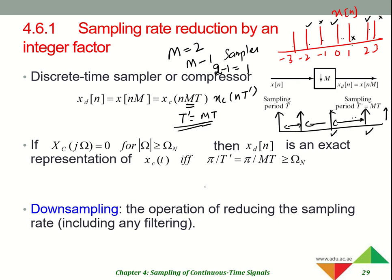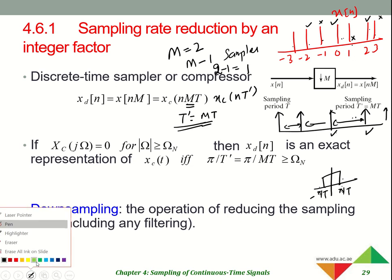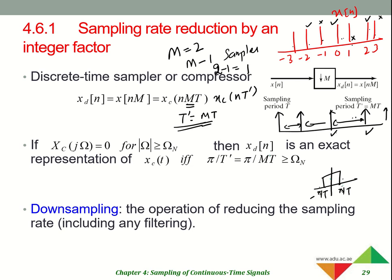If you want to reconstruct your signal, the reconstruction filter has cutoff frequencies at ±π/T. Now, because we have increased the sampling period, the reconstruction filter should have cutoff frequencies at ±π/(M·T) — the new time period — so that we can correctly recover the actual down-sampled signal.